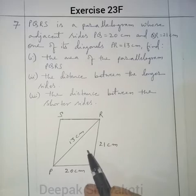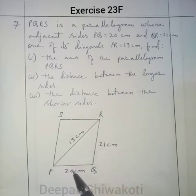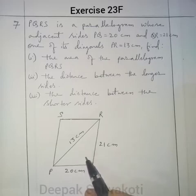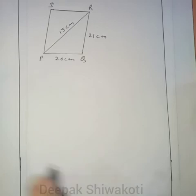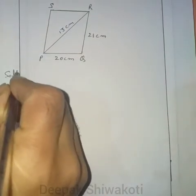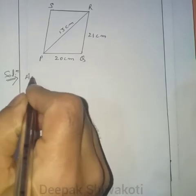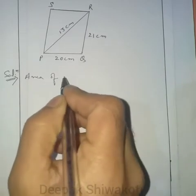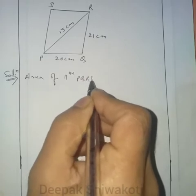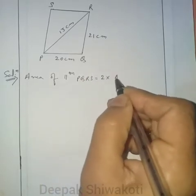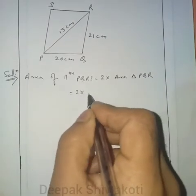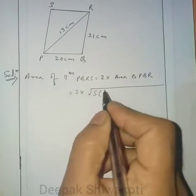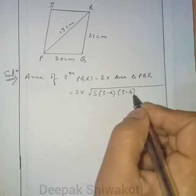So if we find the area of this triangle and multiply by 2, we will get the area of parallelogram PQRS. To find the area of this triangle, we have three sides given, so we can use Heron's formula. Area of triangle PQR is given by the square root of S(S−A)(S−B)(S−C).